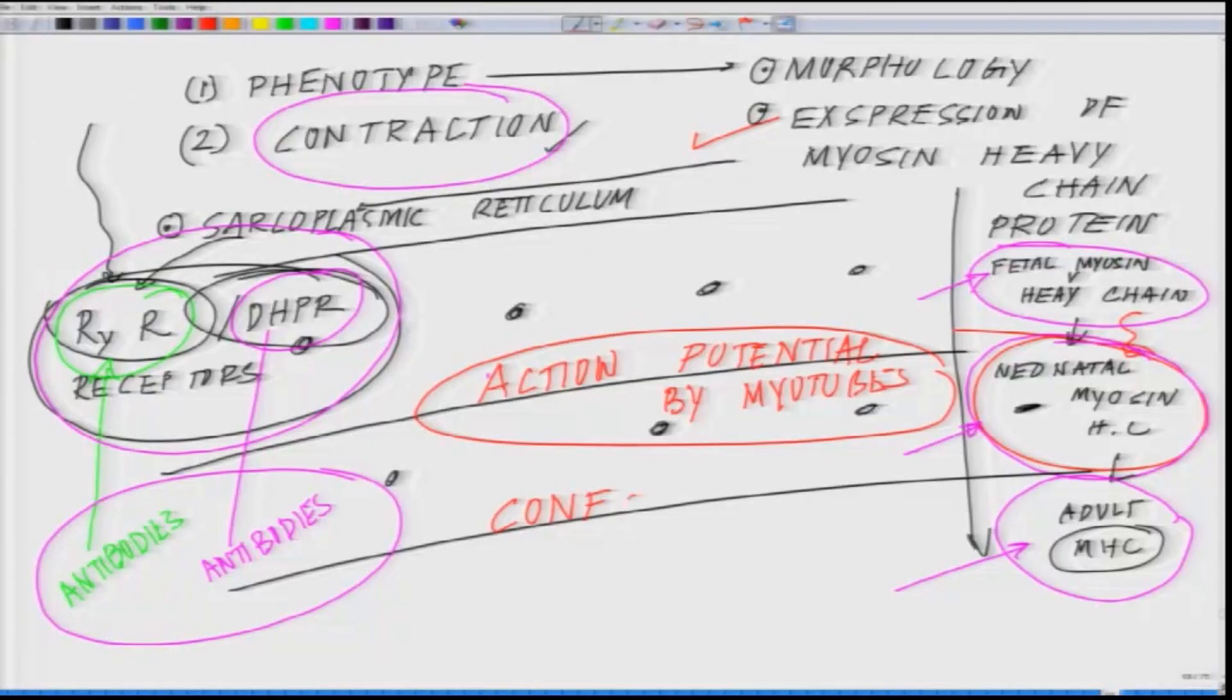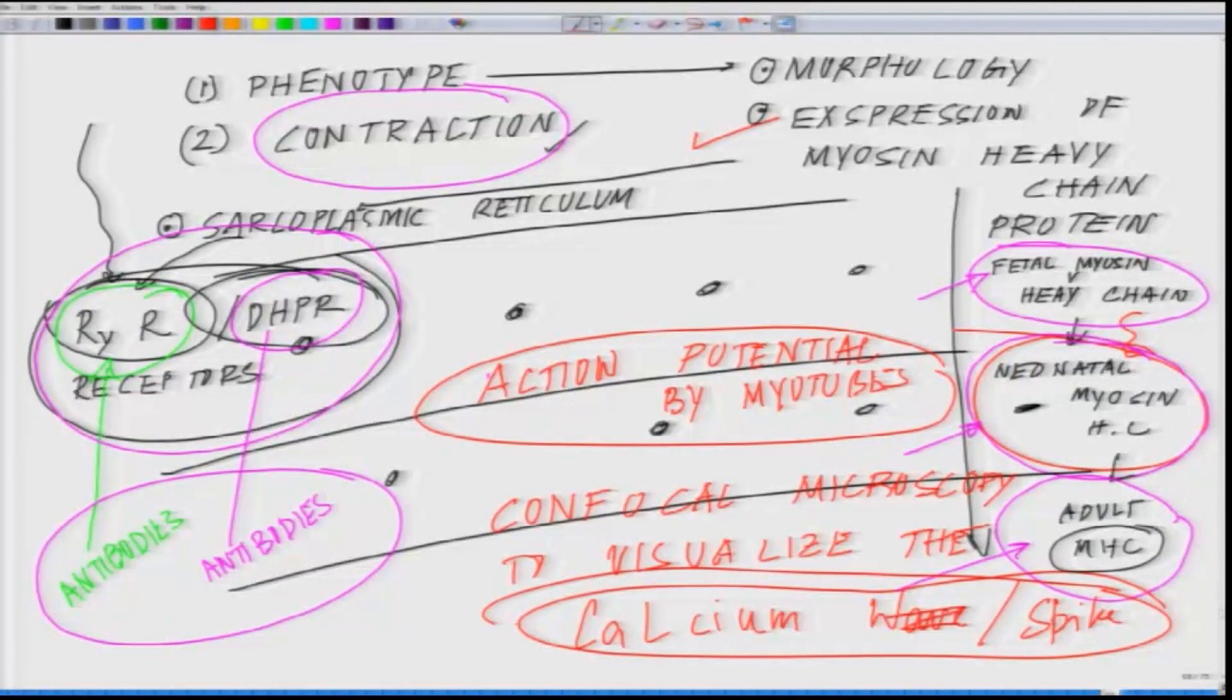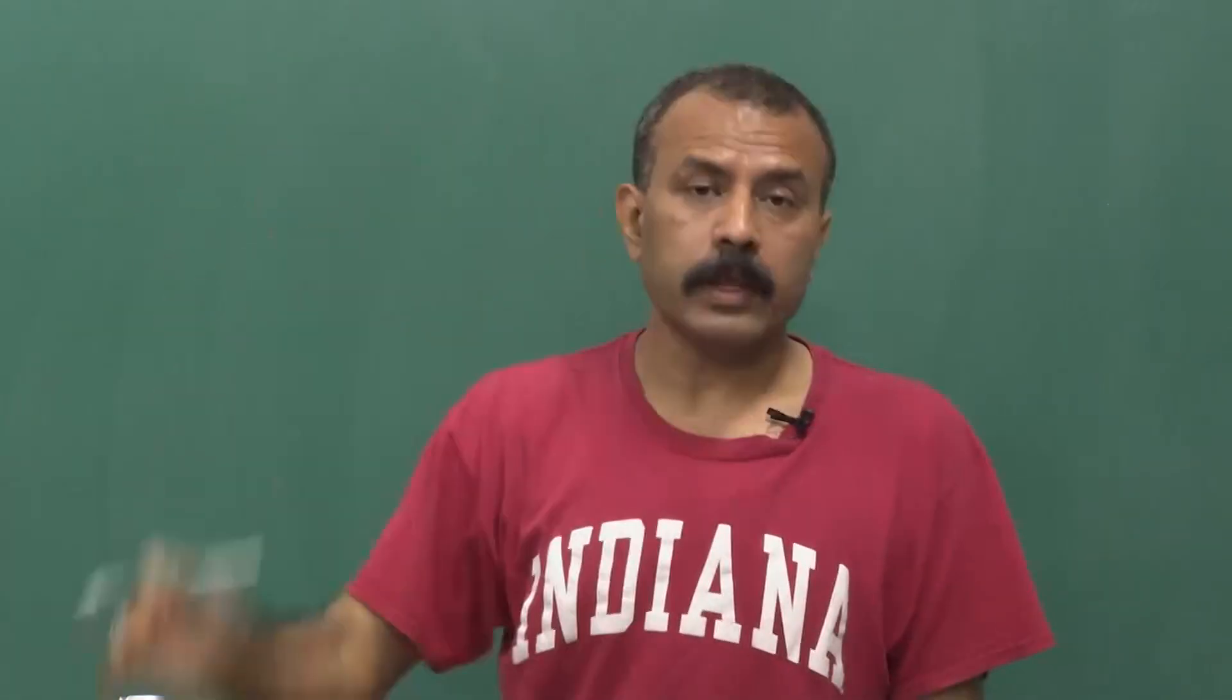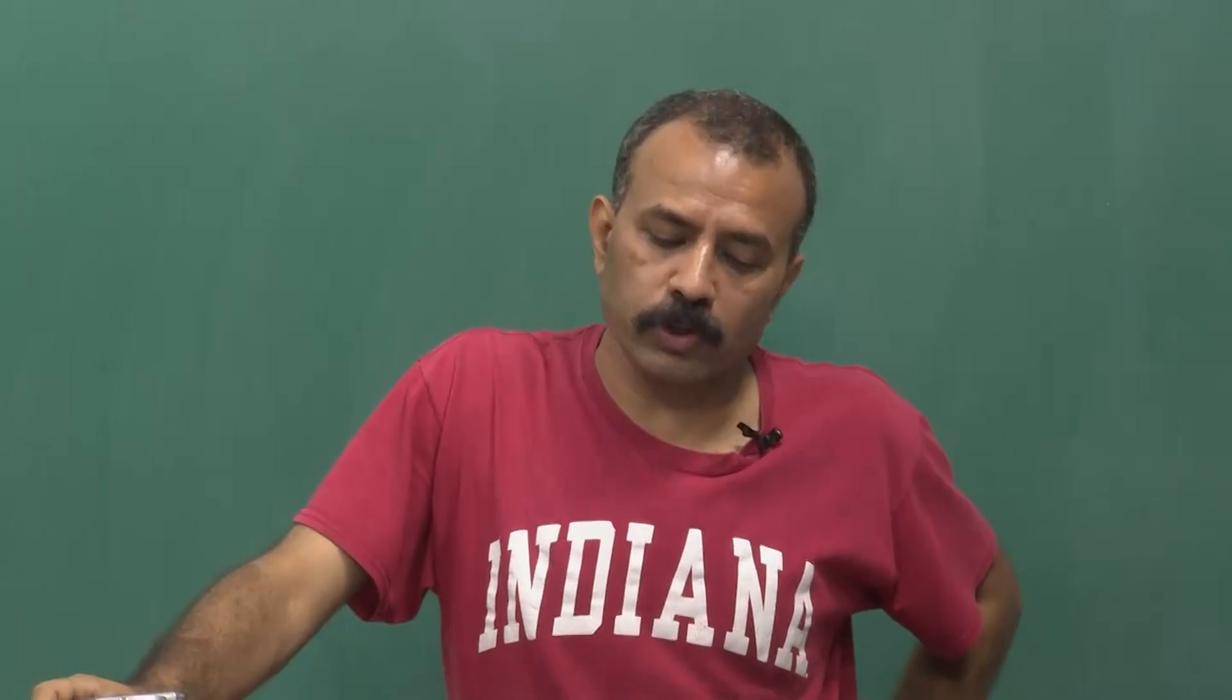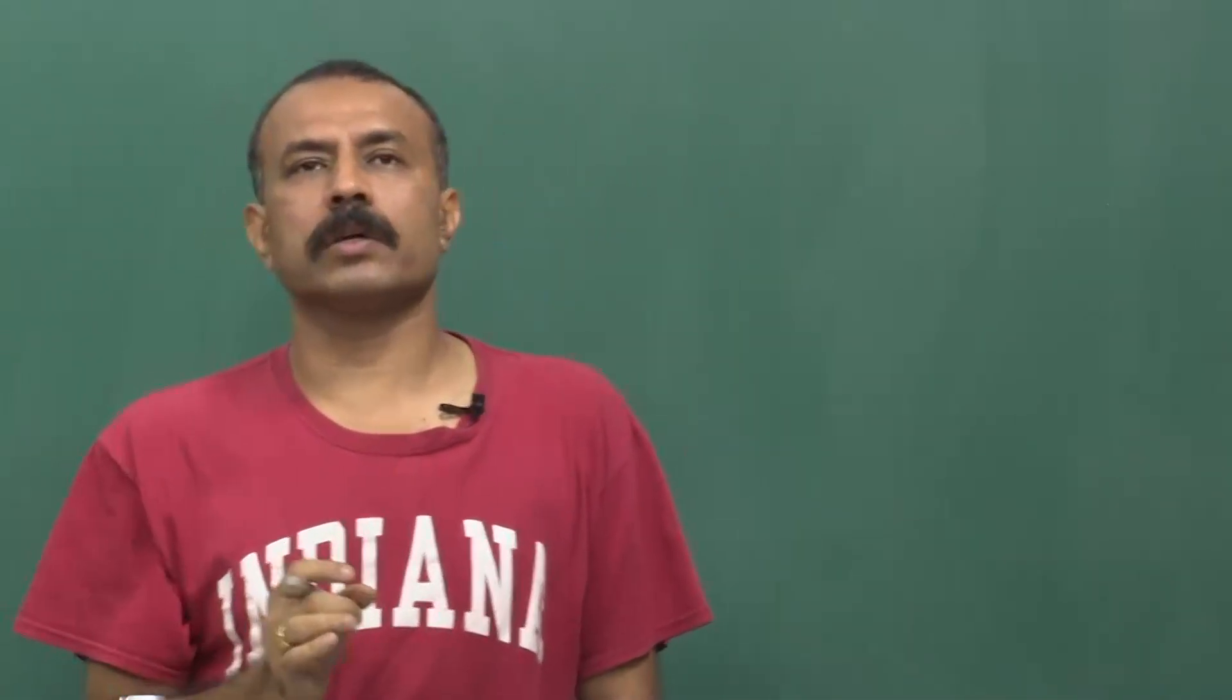Next important characterization: you should be able to use confocal microscopy to visualize the calcium spike. When you do calcium measurements, you need specific dyes which will bind to the calcium. Now you can make a wish list of things you have to procure to say with certainty your in vitro system works.